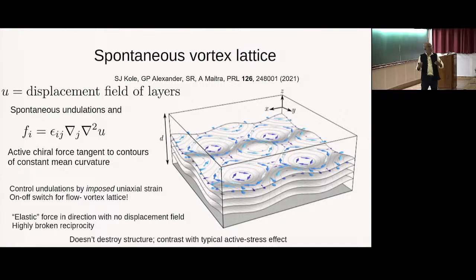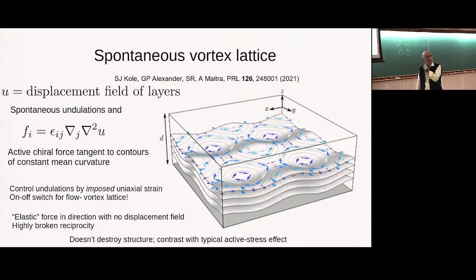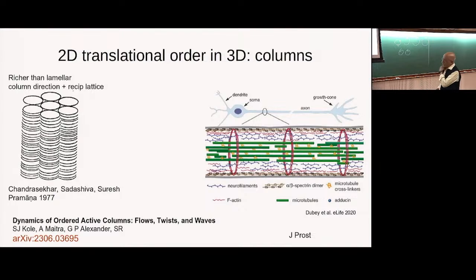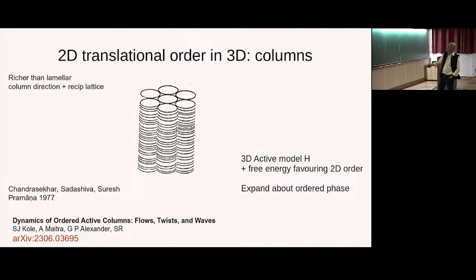You calculate the flow field by putting that force density into the Stokes equation. So that was lamellar phases. Let's discuss columnar phases. The columnar phase has greater potential for interesting things because you've got the column direction whose symmetries you can worry about, and you have the reciprocal lattice of the 2D order. This is a system with 2D order in 3D — actually a picture from the first paper reporting 2D order in three dimensions reported at the Raman Institute, a few kilometers from here. To study it, you go back to our Active Model H, use a free energy functional that favors 2D order, and look in parameter space where you can get 2D order.